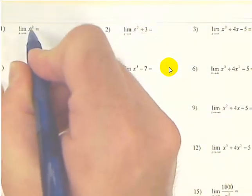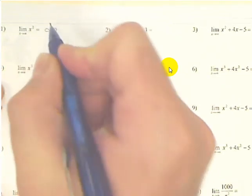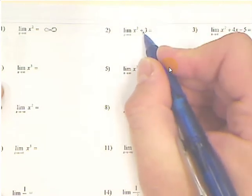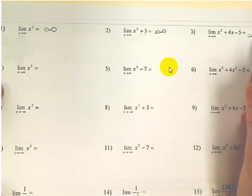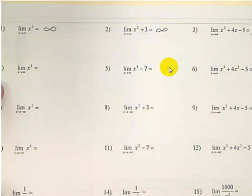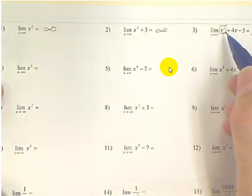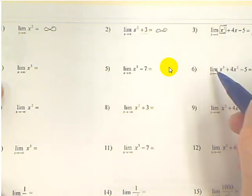What y value is this graph approaching as you go to the right forever? Since it's headed up forever, the answer is just infinity. This parabola is also headed up as you go to the right, so it's also infinity, and same thing with number 3. What's important to know is the shape of the graph comes from this guy right here — that's called the dominant term. The dominant term has the largest exponent. The other stuff in the equation doesn't change the shape of the graph; it just moves it left and right and up and down.